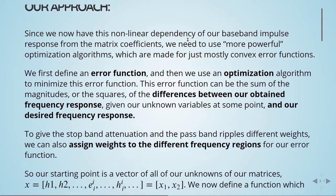We first define an error function and then use an optimization algorithm to minimize it. This error function can be the sum of the magnitudes, or the squares of the magnitudes, of the differences between our obtained frequency response, given our unknown variables at some point, and our desired frequency response.